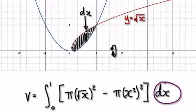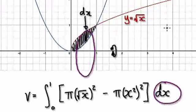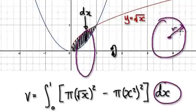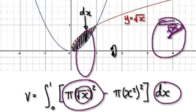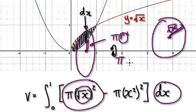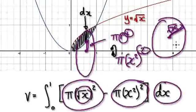We would need to get the big circle. The radius of the big circle is root x, so the radius here would be root x. So it would be π times root x squared — this gives us the area of the big circle. Now take away the small area. The small circle's radius would be the blue line, which is x squared. So it would be π times x squared, squared. And then taking this away from the big circle gives you the washer here.